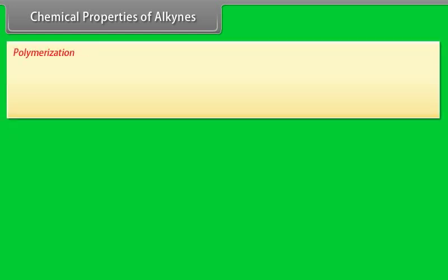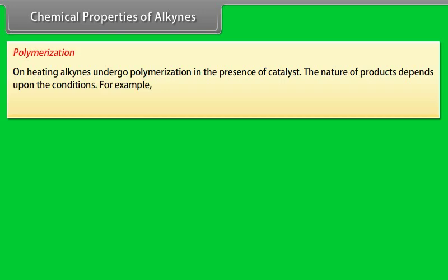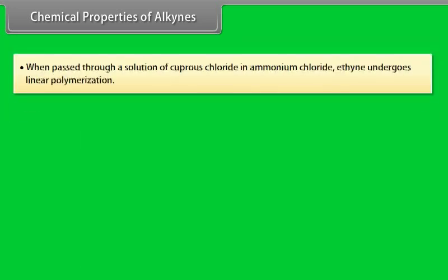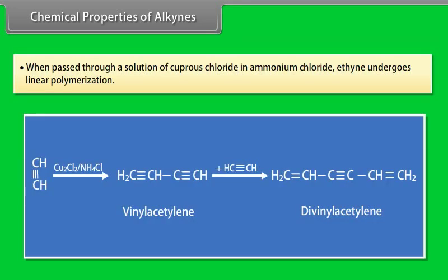Polymerization: on heating, alkynes undergo polymerization in the presence of a catalyst. The nature of products depends upon the conditions. For example, when ethyne (acetylene) is passed through a hot copper tube, it polymerizes to benzene. When passed through a solution of cuprous chloride in ammonium chloride, ethyne undergoes linear polymerization.